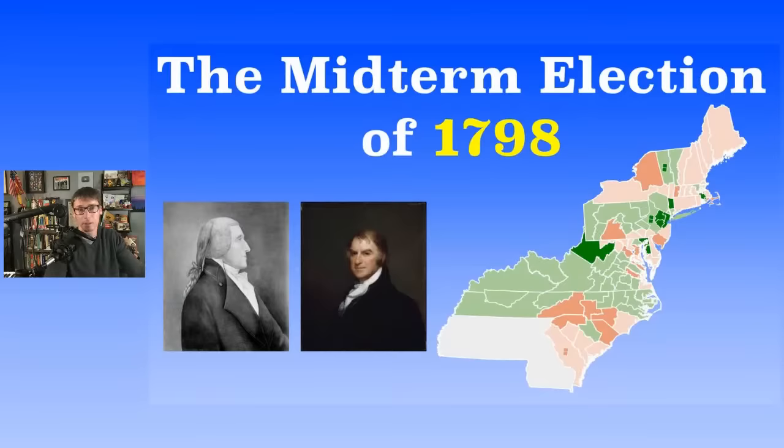1798 was the middle of John Adams' only term. This was for the 6th Congress. The Federalists going into 1798 still had a majority — they had regained it with the election of Adams — still had a majority in both the House and Senate.